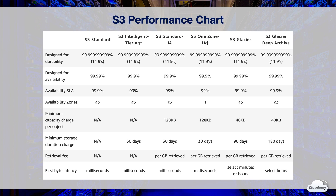S3 Intelligent Tiering, Standard IA, and One Zone IA storage are charged for a minimum storage duration of 30 days. Glacier and Glacier Deep Archive are charged for a longer minimum duration. Objects deleted before the minimum duration incur a prorated charge equal to the storage charge for the remaining days. You need to pay a data retrieval fee for S3 Standard IA, One Zone IA, Glacier, and Glacier Deep Archive. S3 provides first-byte latency of milliseconds for S3 Standard, Intelligent Tiering, Standard IA, and One Zone IA. The retrieval time for Glacier and Glacier Deep Archive is from minutes to hours.